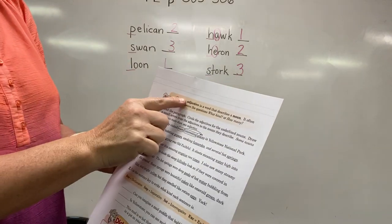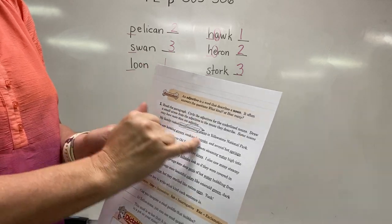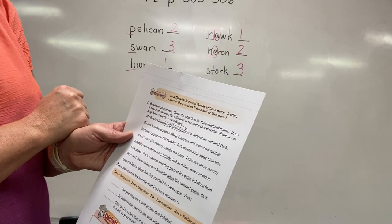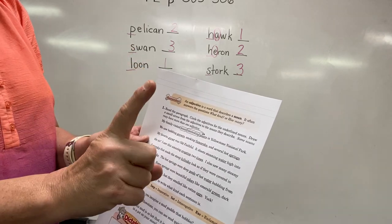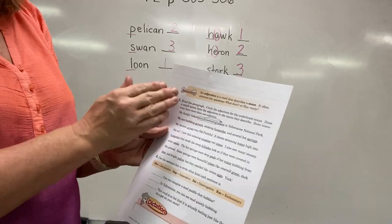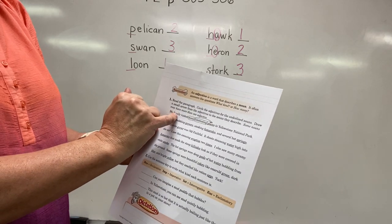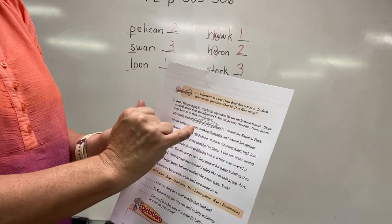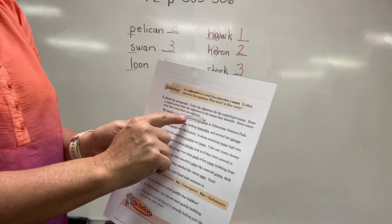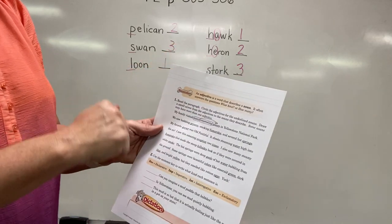In section one, remember an adjective is a word that describes a noun. It often answers the questions 'what kind' and 'how many.' Read the paragraph, circle the adjectives for the underlined nouns, and draw a small arrow from the adjective to the noun it describes. You have to do two things: circle the adjectives and draw arrows. The first sentence is done for you: 'My family visited many interesting places in Yellowstone National Park.' Places is underlined - interesting tells what kind, and many tells how many.